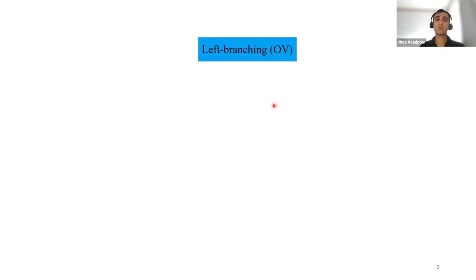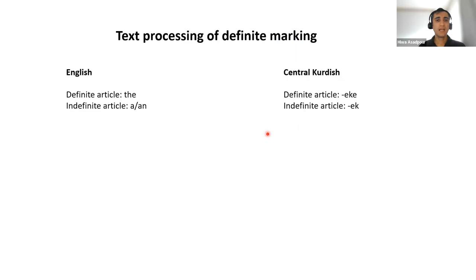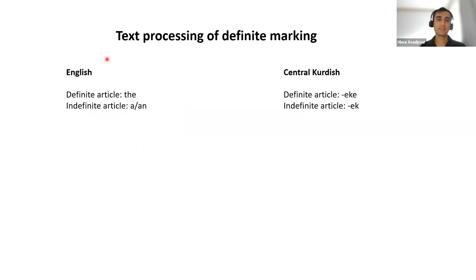Kurdish is also known as an OV language variety — left branching. It is considered OV in the literature, though whether it is really OV or VO is a separate discussion. The topic of today is definite marking. By definite marking, I'm referring to the definite article 'the', the indefinite article 'a/an', and demonstratives — 'this', 'that', 'these', 'those'. These are the English equivalents used for analogy.